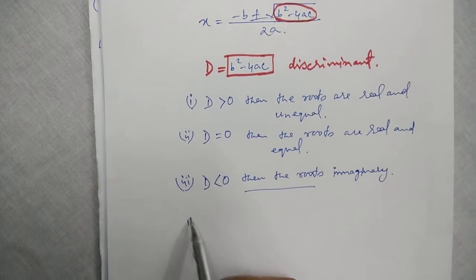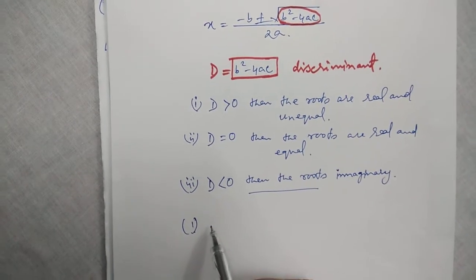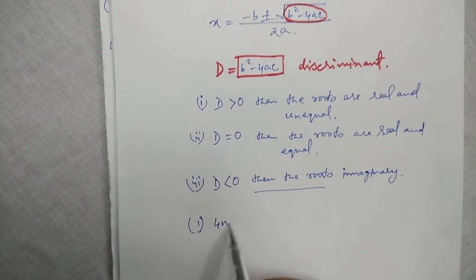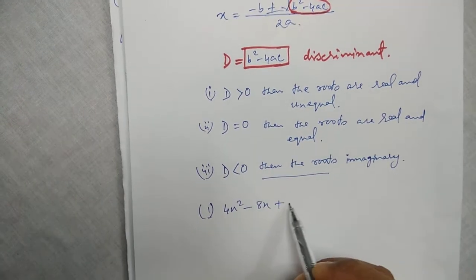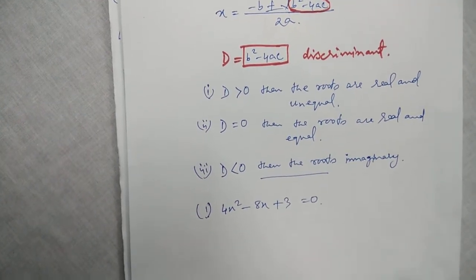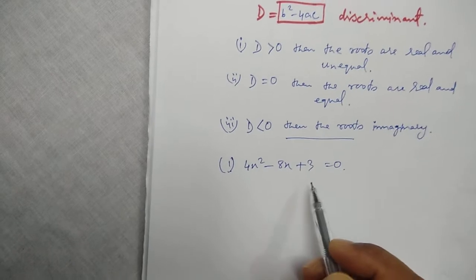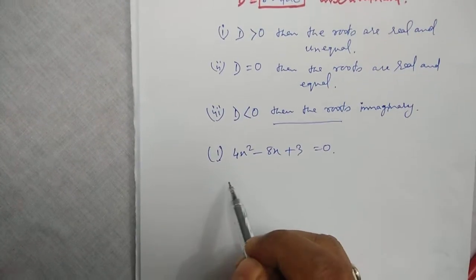For example, question number 1, the equation is 4x square minus 8x plus 3 equal to 0. So, we have to tell about the nature of the roots. We will find the discriminant.